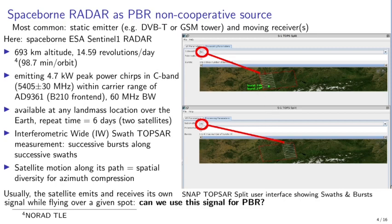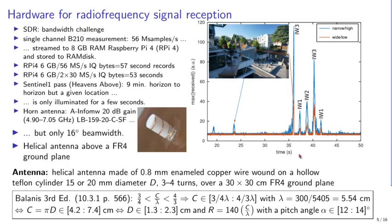Assuming our target is at a given location, we expect to be illuminated with interferometric wide swath 1 parameters between bursts 2 and 3. Interferometric wide swath 3 parameters would not yield a clear image because that is not the correct illumination scheme for our location. Based on this knowledge, we decided to collect raw data from Sentinel-1.